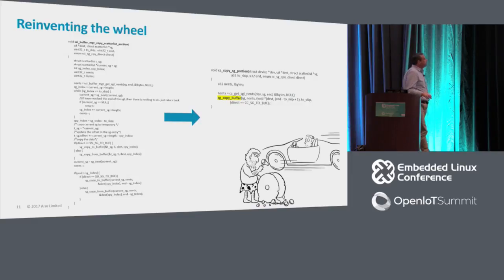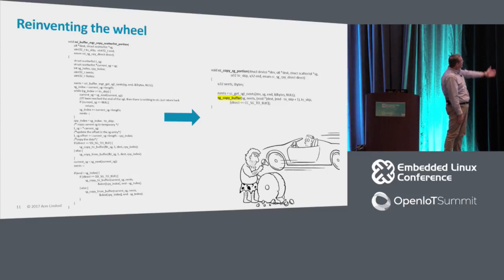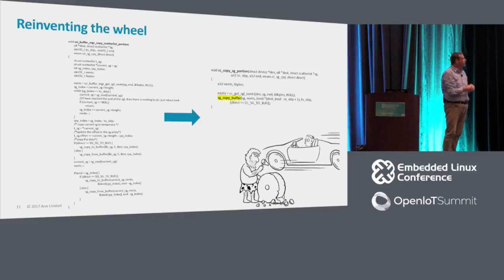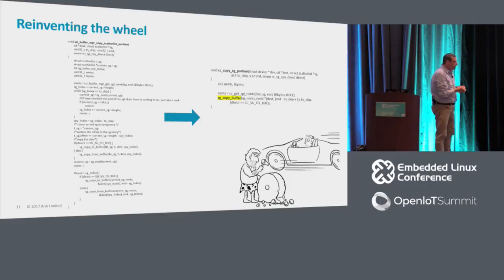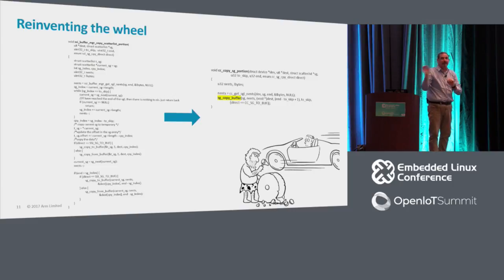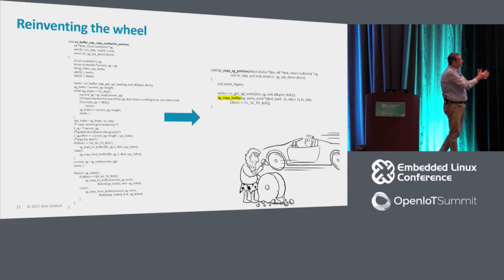The first thing that was really obvious is something I chose to dub 'reinventing the wheel.' What you're seeing here is an original function — SSI Buffer Manager Copies Catalyst portion — which, after all the changes, continued to do the exact same thing but now looks like this. The name changed and it kind of shrunk. What happened here is that the major thing this function was doing was actually replicating a certain API that already existed in the kernel. It wasn't doing it exactly the same way, but you can sort of massage it — change the parameter a little bit — and express the old function in terms of a wrapper around the new function.